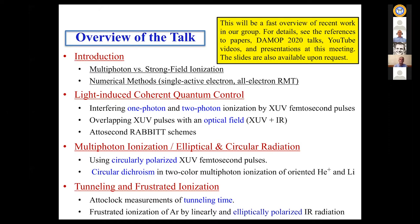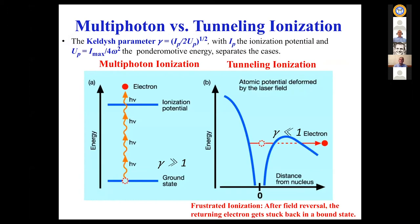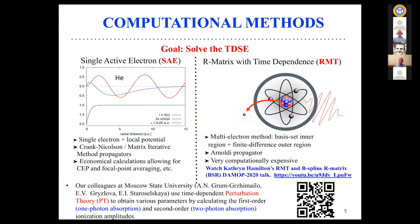There are a couple of topics, starting with an introduction. Everybody here knows the difference between multiphoton ionization and tunneling ionization — I'm going to talk about both. The Keldysh parameter determines what happens. I'll also talk about frustrated ionization, which is a strong-field process where the field may drive the electron back and it could get stuck in a bound state. For computational methods, one very popular approach is the single active electron approximation, SAE.